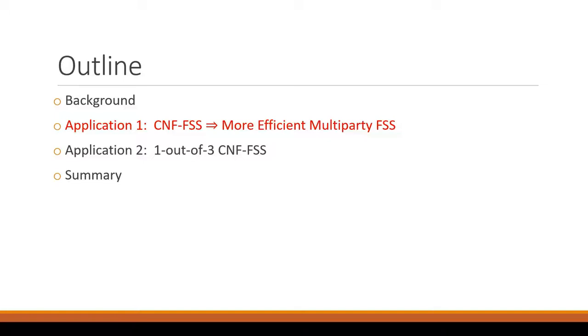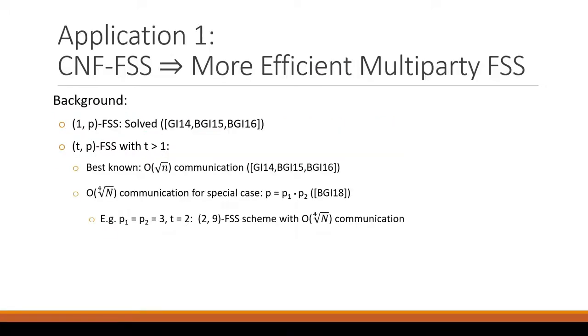Okay, moving to our first result of using CNF FSS to get more efficient multi-party FSS. So as some background, the 1 out of 2 DPF case was solved in the original FSS works, and solved here means optimal communication. So it can be demonstrated as a lower bound, you need at least log N bits of information in the key, where N is the size of the DPF domain, the point function domain. So the original works constructed a GEN protocol that realized that optimal log N communication.